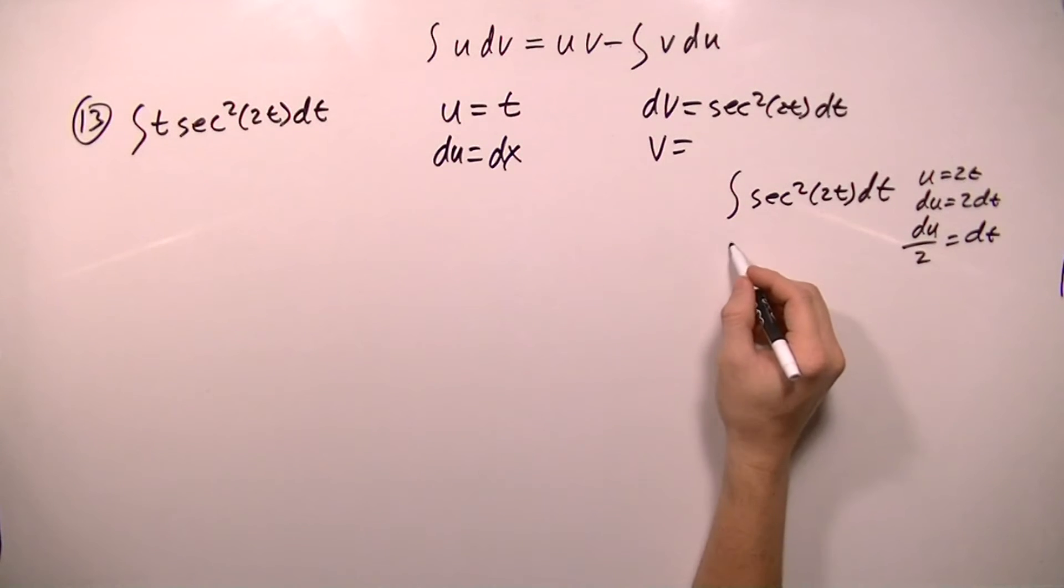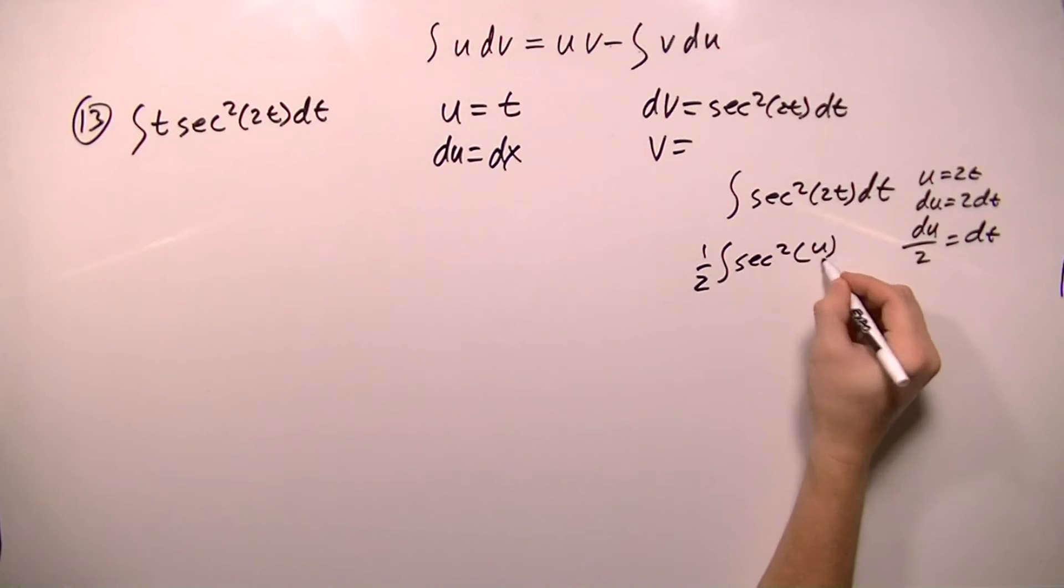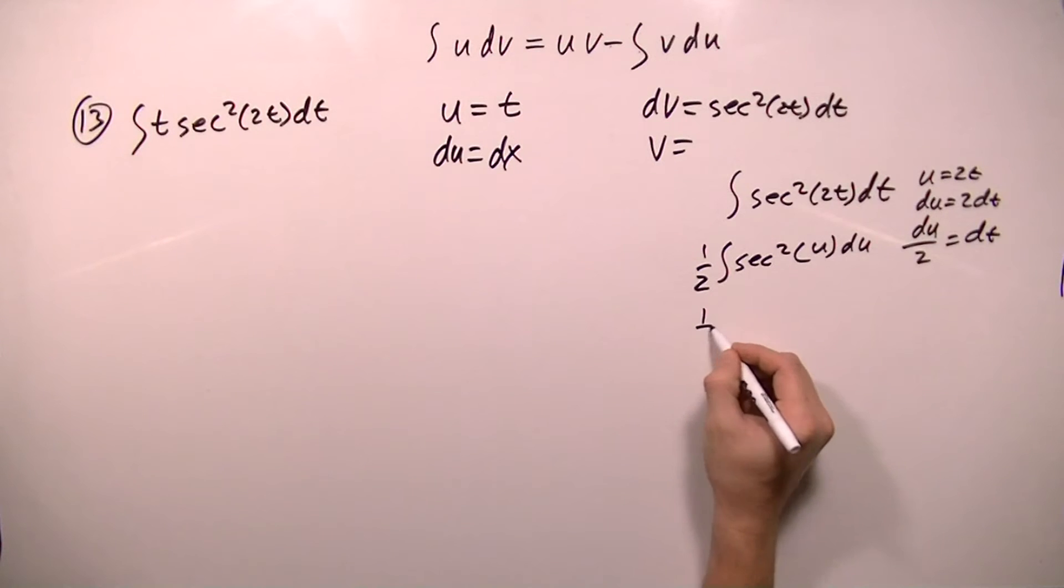So I can make my substitution, and this over 2 is going to factor out. And I'm going to get secant squared of u du.